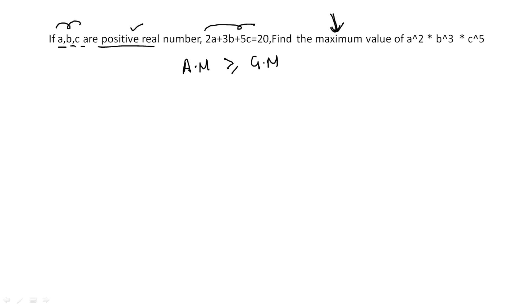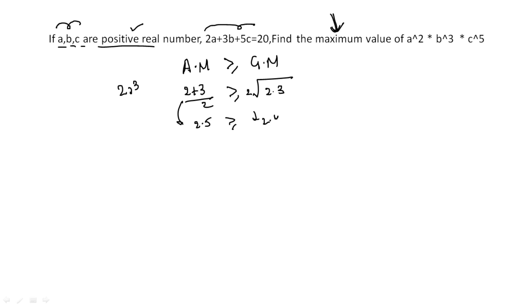Arithmetic mean is greater than or equal to geometric mean for the same number of values. For example, if I take two numbers — 2 and 3 — the arithmetic mean is (2+3)/2 = 2.5, and the geometric mean is √(2×3) ≈ 2.4. You can see that arithmetic mean will always be greater than or equal to geometric mean for the same number of values.